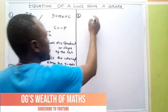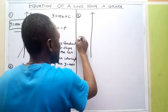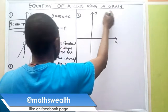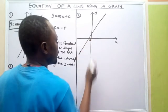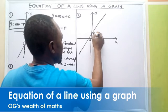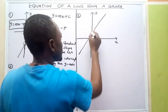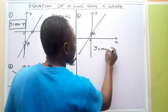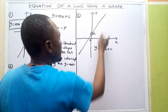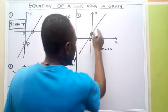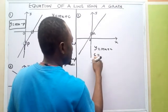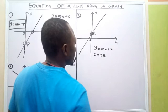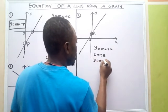Now let's take another question. This is the line, with x and y axes and origin at 0. Let's call this point r. The line is moving from the top right to the bottom left, so the gradient is positive. The line crosses the y axis on the positive side, so c equals positive q. The equation for this line would be y equals mx plus q.